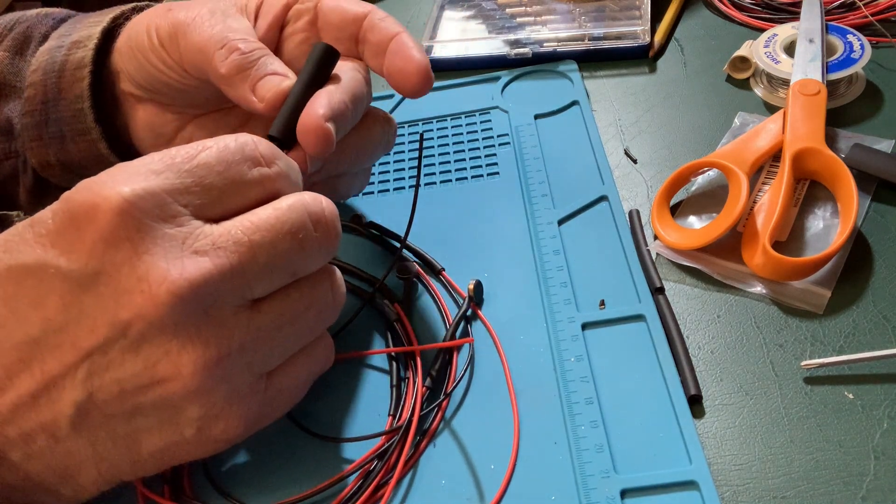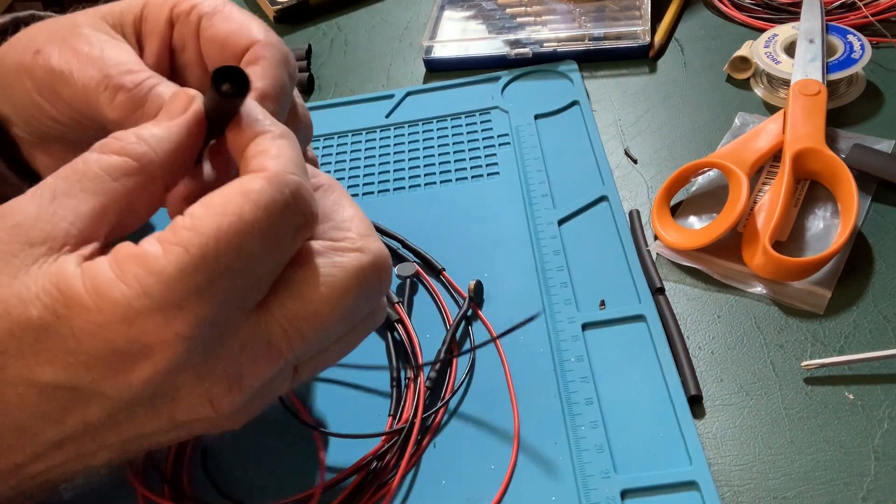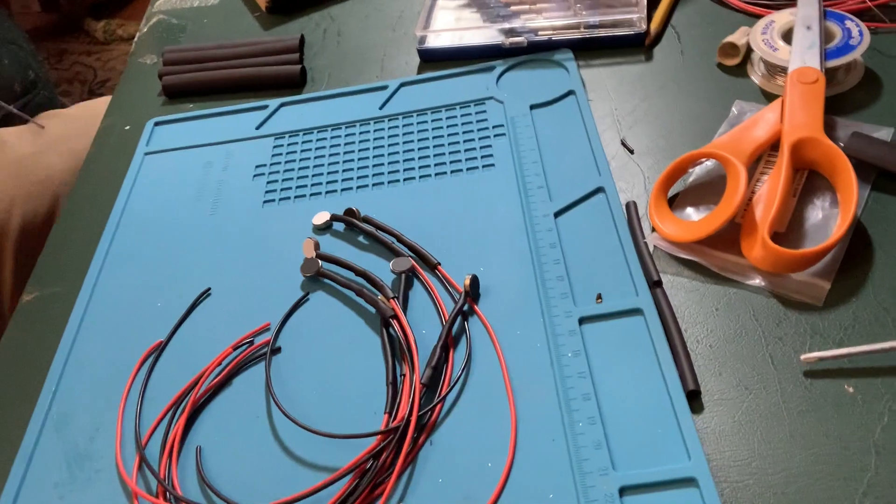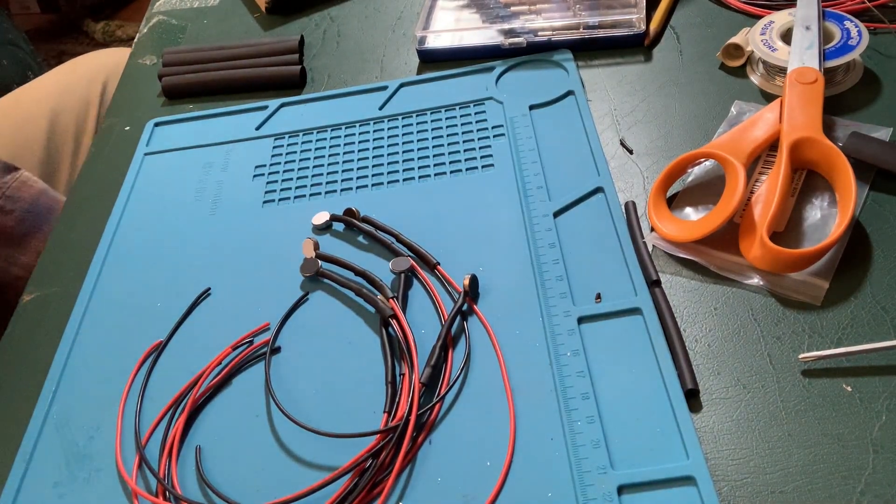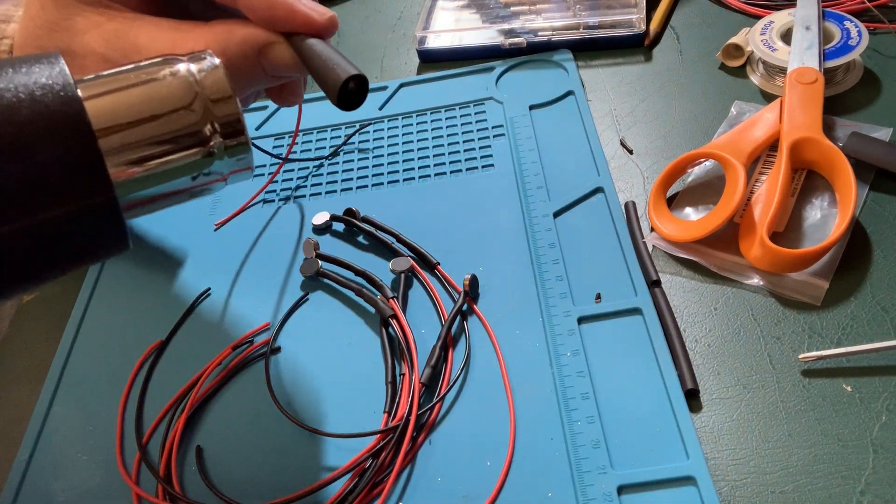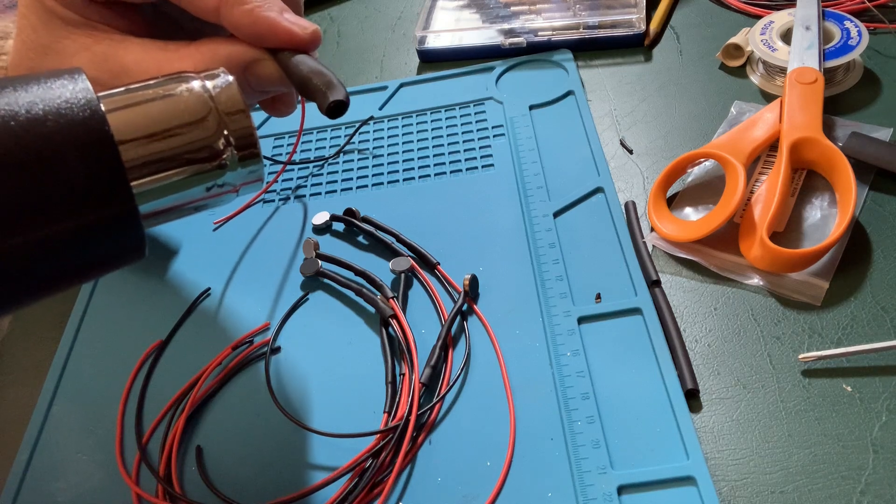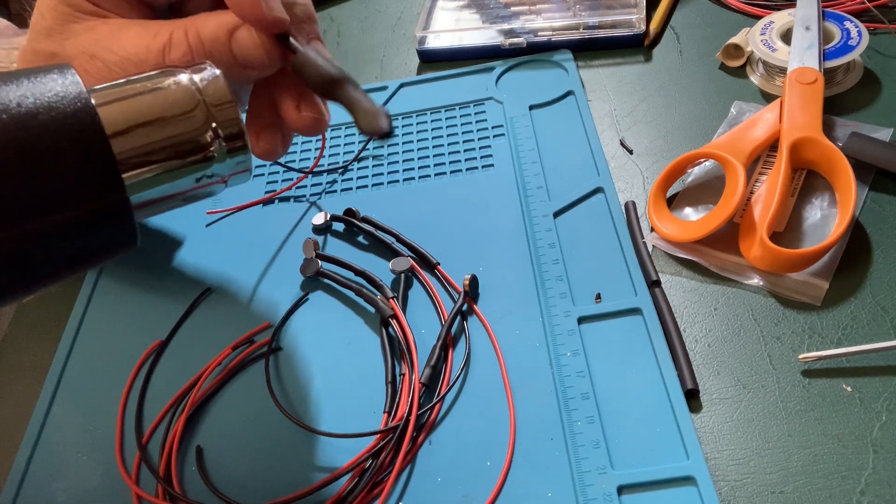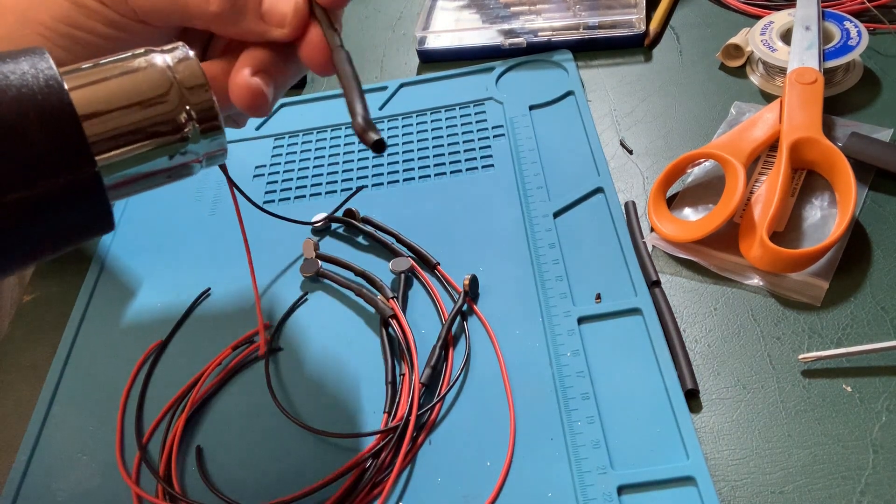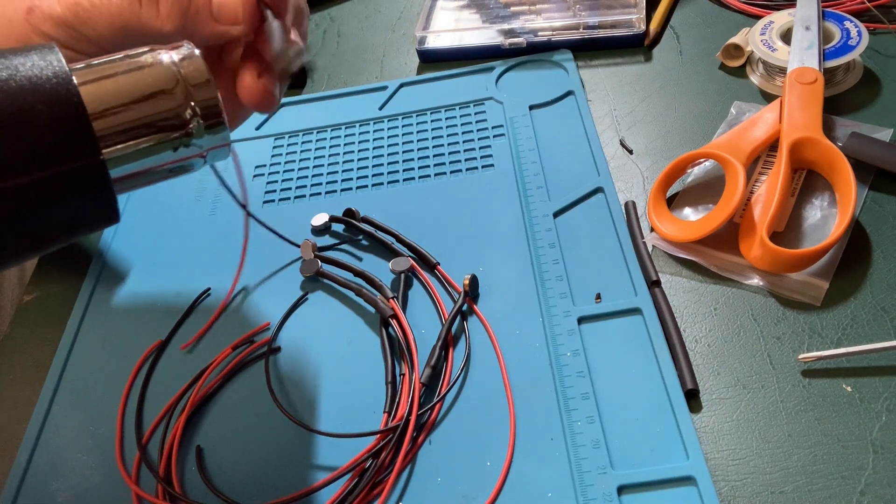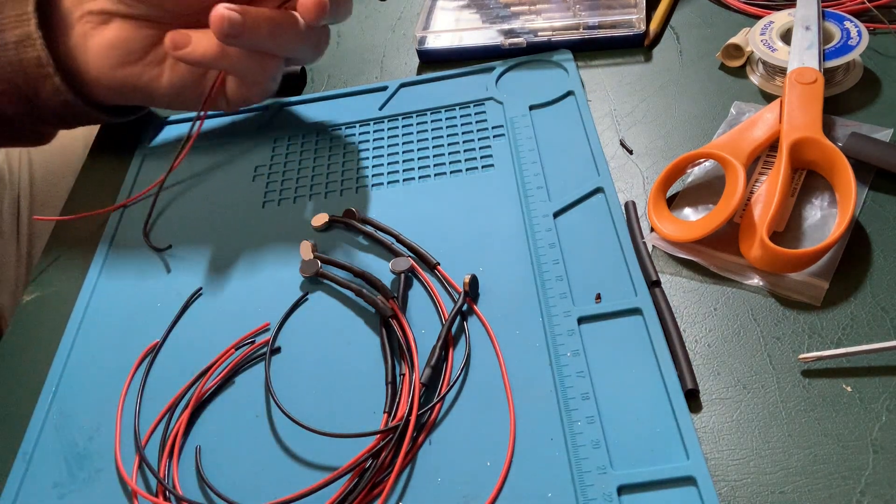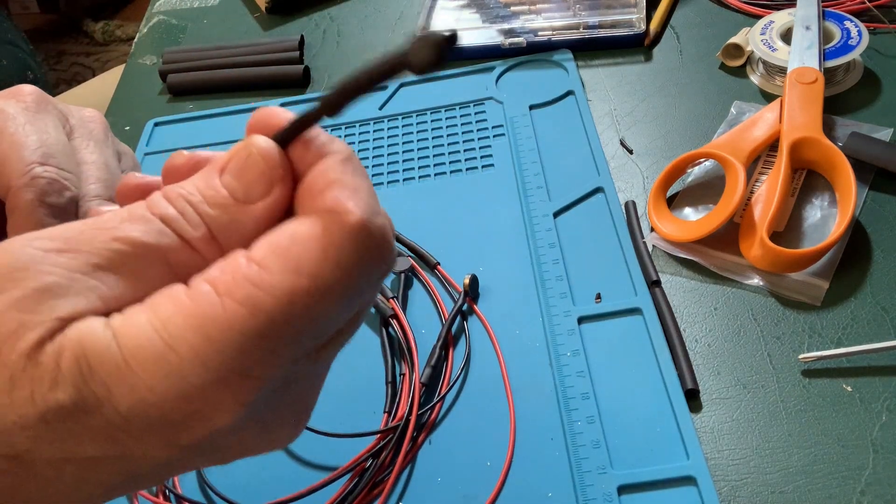So I take, this is a three-eighths inch heat shrink, and I put it over enough that the motor is slightly into it. What this allows me to do is to strengthen that connection of the motor into the heat shrink or into the wire itself.